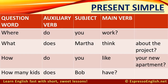Where do you work? The question word is 'where,' the auxiliary verb is 'do,' the subject is 'you,' and the main verb is 'work.' Here are three more examples: What does Martha think about the project? How do you like your new apartment? How many kids does Bob have?